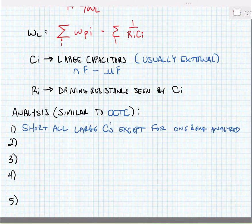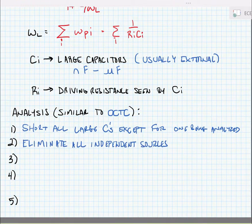Next we're going to eliminate all independent sources. Of course what this means is that we short DC voltage sources and open DC current sources. And of course short AC voltage sources and open AC current sources.